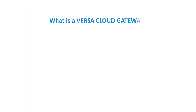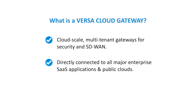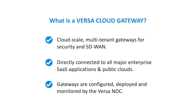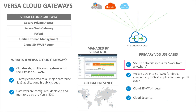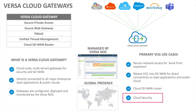Versa Cloud Gateways are cloud-scale, multi-tenant gateways for security and SD-WAN. They offer direct connectivity to all major enterprise SaaS applications in public clouds, and the gateways are configured, deployed, and monitored by the Versa NOC. The primary use cases include secure network access for work from anywhere, weaving Versa Cloud Gateways into your SD-WAN for direct connectivity to SaaS applications, use as a cloud SD-WAN router, and use as a cloud security solution.